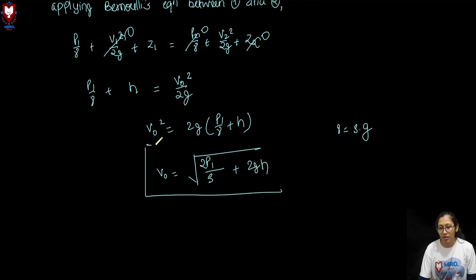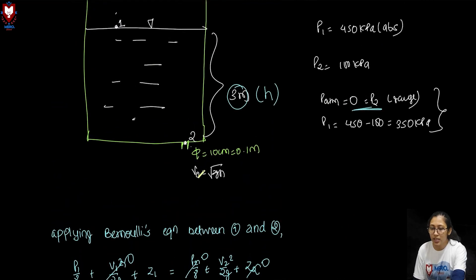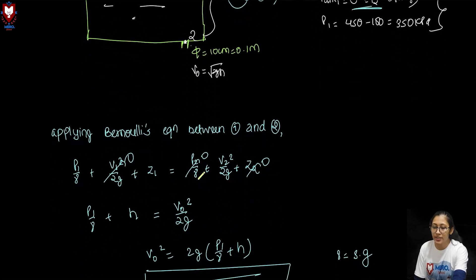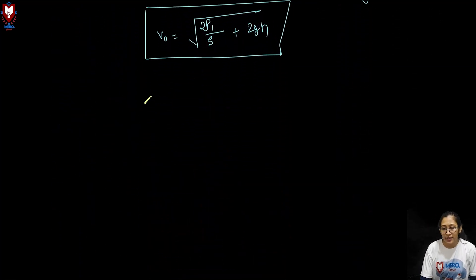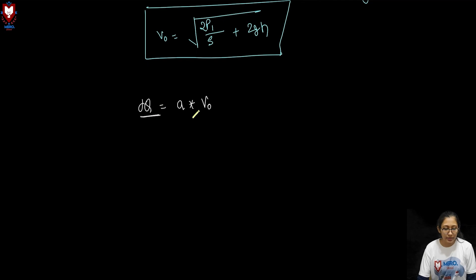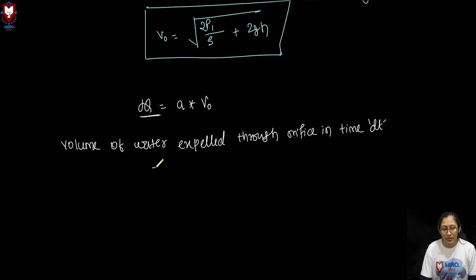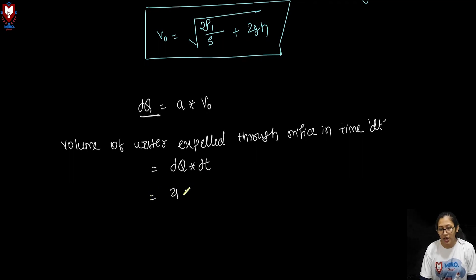We use this expression for orifice velocity V0. As a small volume dQ discharges through the orifice in small time dt, dQ equals the cross-sectional area of the orifice (small a) multiplied by V0. The volume expelled through the orifice equals the small area a times V0 times dt.